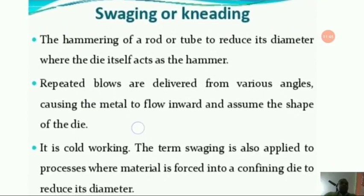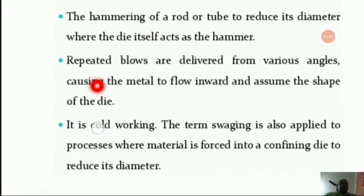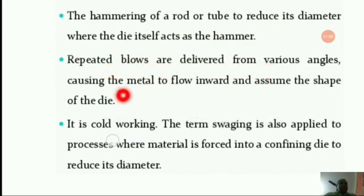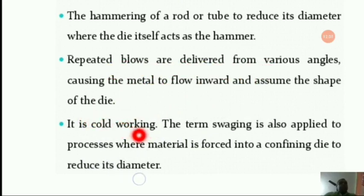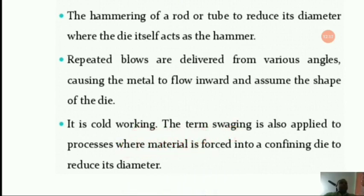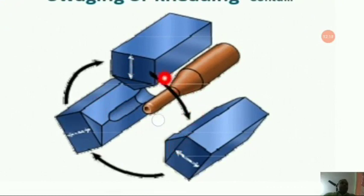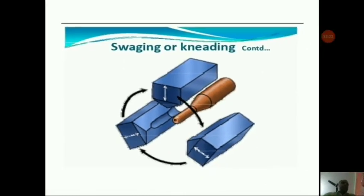Swaging or kneading is the hammering of a rod or tube to reduce its diameter, where the die itself acts as a hammer. Repeated blows are delivered from various angles causing the metal to flow inward and assume the shape of the die. It is a cold working process; swaging is also applied to processes where material is forced into a confining die to reduce its diameter.